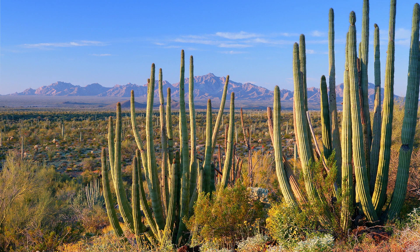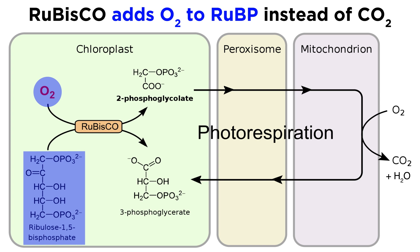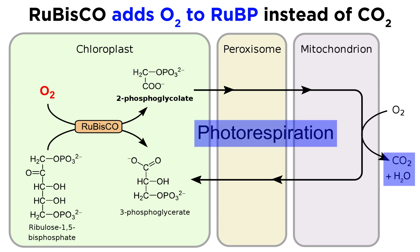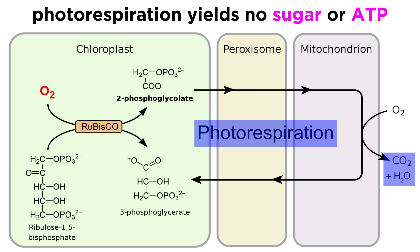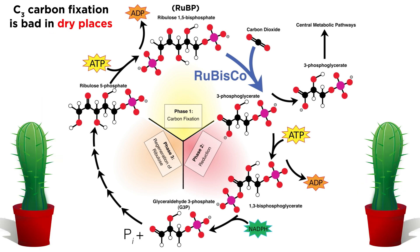One aspect of this method of photosynthesis which makes it difficult for plants in dry environments is that when the stomata close to reduce water loss, O2 builds up and rubisco will add O2 instead of CO2 to RuBP. A two-carbon product of this reaction is then broken down to CO2 and H2O in a process called photorespiration. Photorespiration yields no sugar and produces no ATP; instead, it can actually burn through carbon previously fixed by the Calvin cycle. So C3 photosynthesis, while the most widespread of all forms, is actually not very efficient in arid environments.